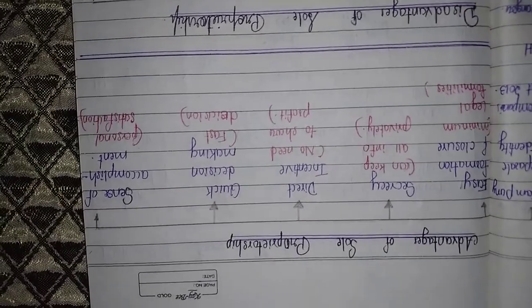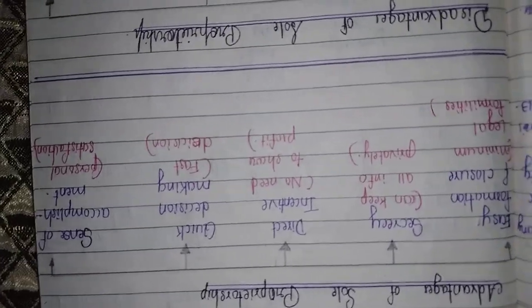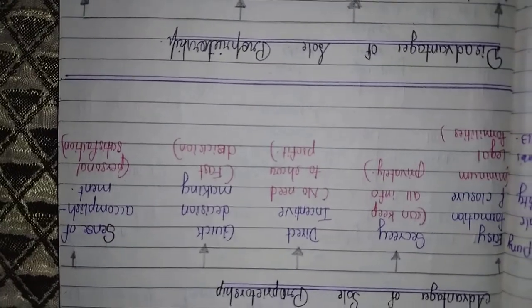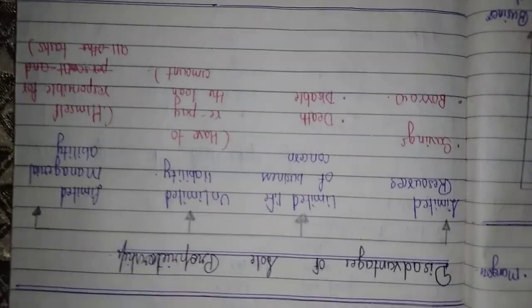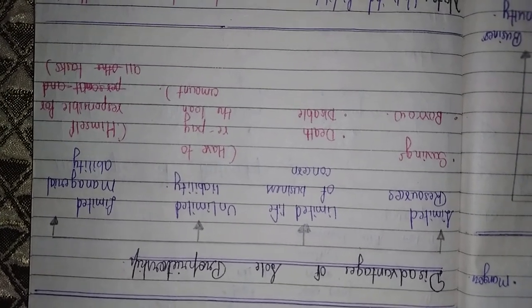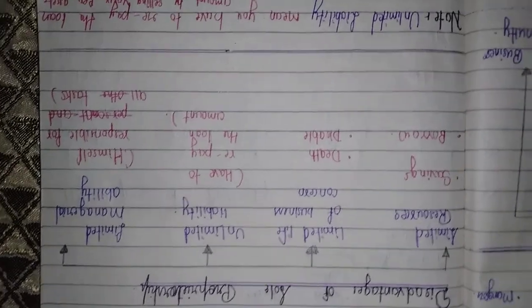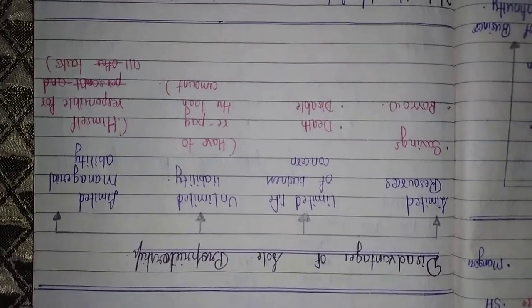The last one is sense of accomplishment. This means that you get personal satisfaction. Now we will talk about disadvantages of sole proprietorship. First one is limited resources. You are the only person who can bring funds and everything for the business, so your savings and borrowings from family or friends will be limited only.